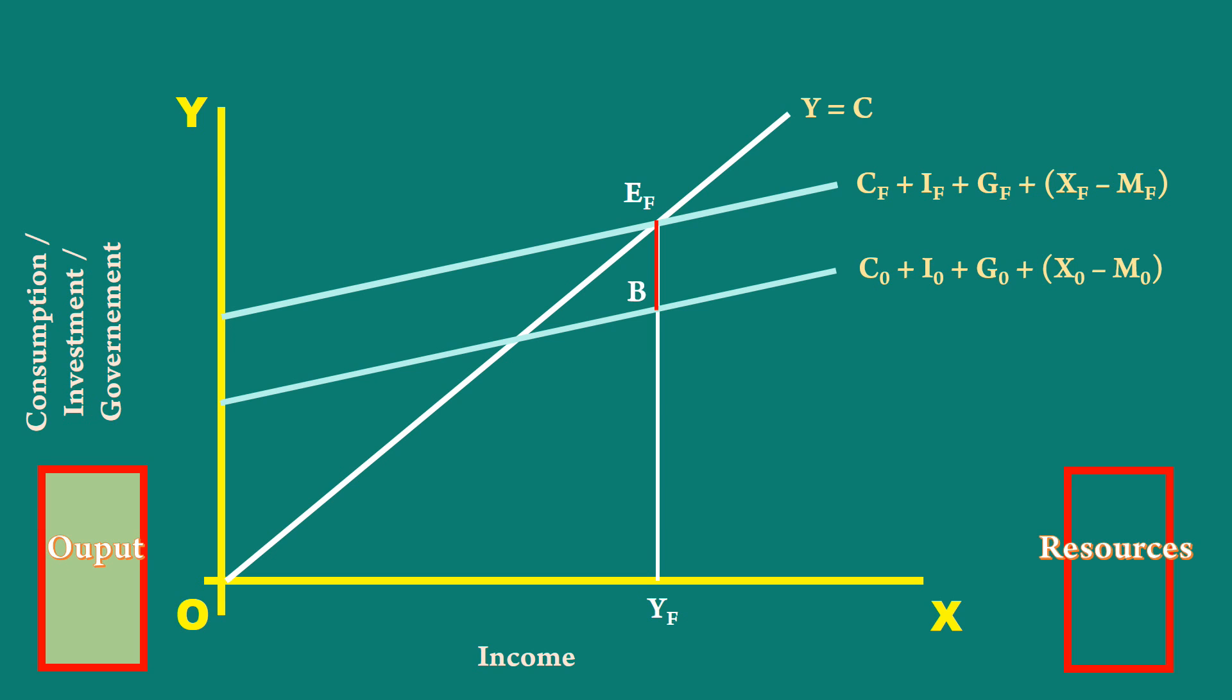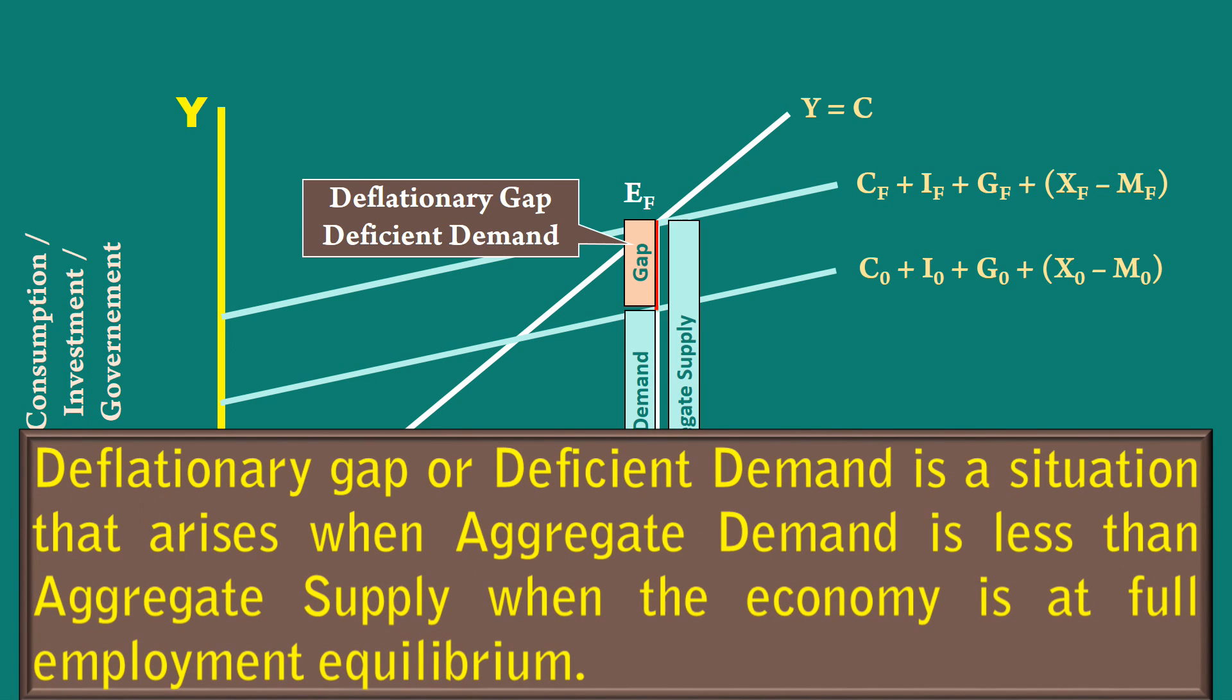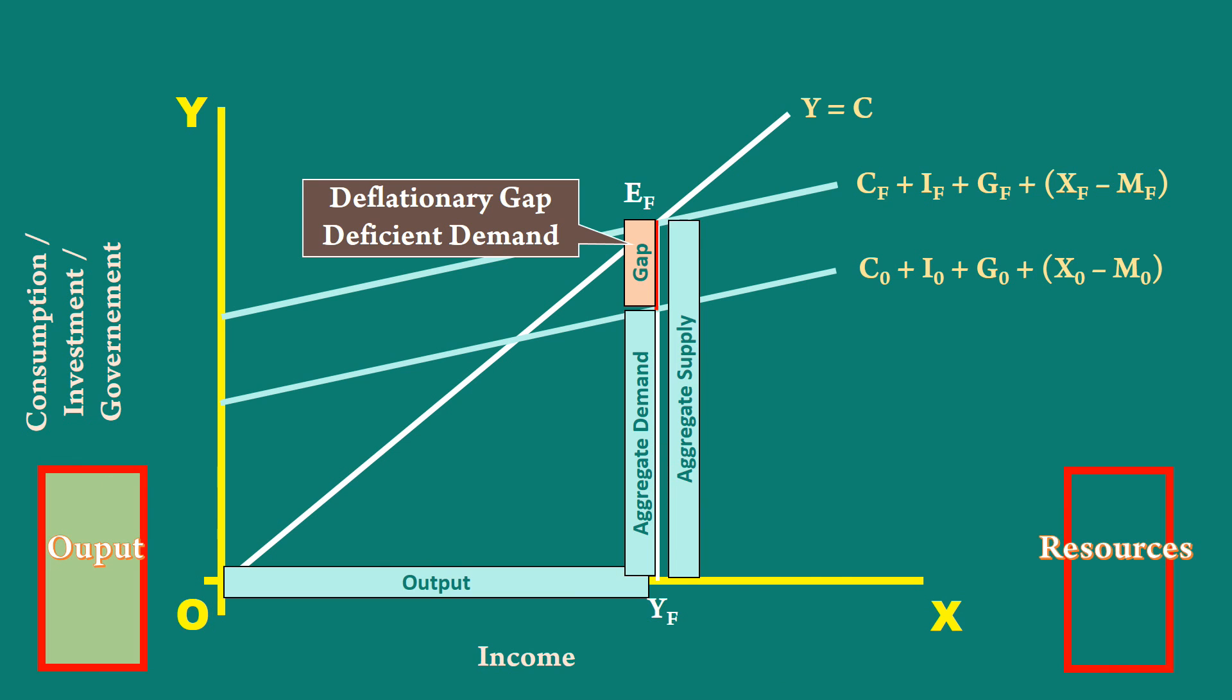What shall we infer from this? The output is OYF. OYF is equal to YF EF. This is aggregate supply. Economy's expenditure is YF B. This is aggregate demand. Aggregate demand is less than aggregate supply. There is a gap between aggregate demand and aggregate supply. This gap is called deflationary gap. It is also known as deficient demand. We shall understand the deflationary gap as deflationary gap or deficient demand is a situation that arises when aggregate demand is less than aggregate supply, when the economy is at full employment equilibrium.